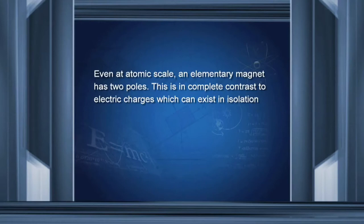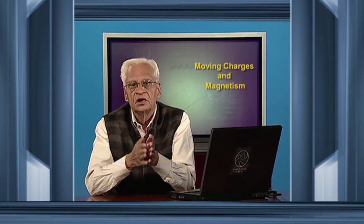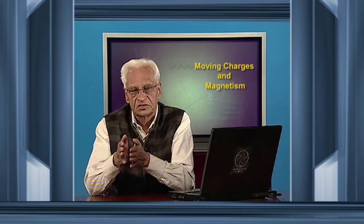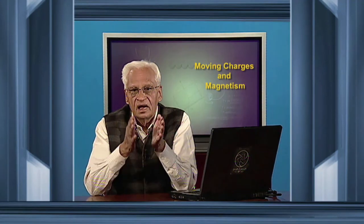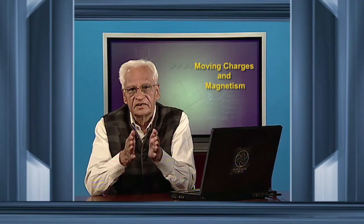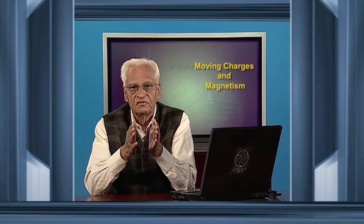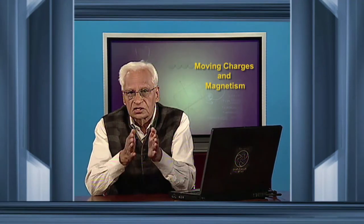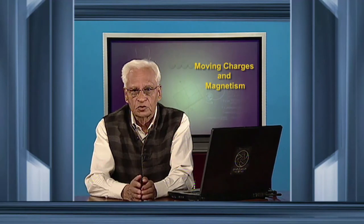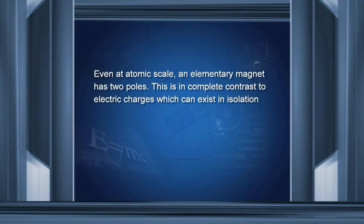This is in complete contrast to electric charges, which can exist in isolation. You can have positive charge, you can have negative charge. But here, each magnet must have both poles. You cannot have an isolated pole or a monopole.